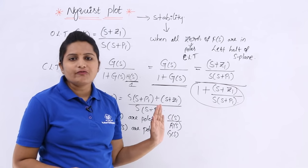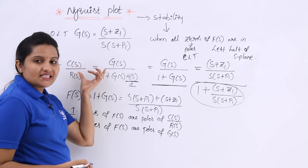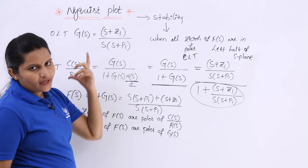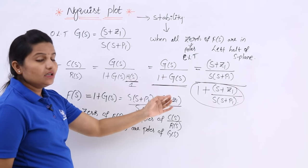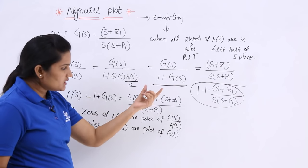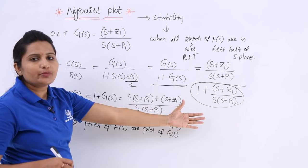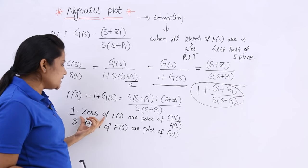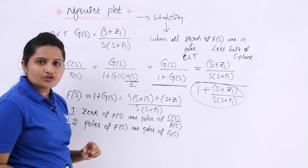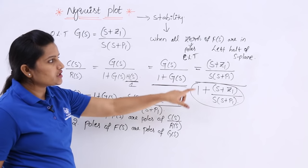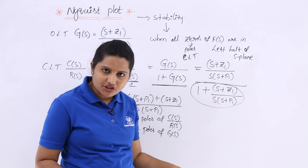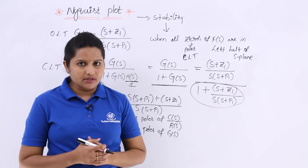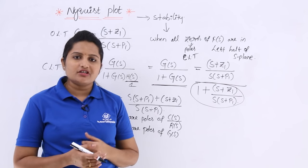This is the stability analysis of the Nyquist plot. There is no need to calculate C(s)/R(s) each time. Just take 1 + G(s) using the given open loop transfer function, and examine the zeros. The zeros of F(s) are the poles of the closed loop transfer function. If all those poles are in the left half of the s-plane, then the system is stable — this is how we define stability according to Nyquist analysis.